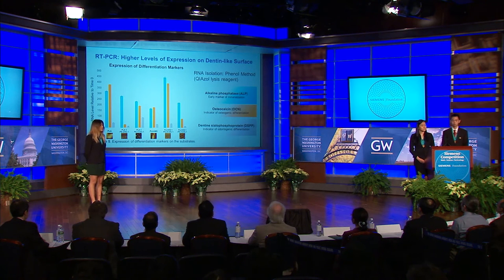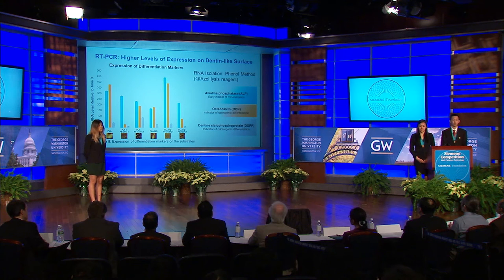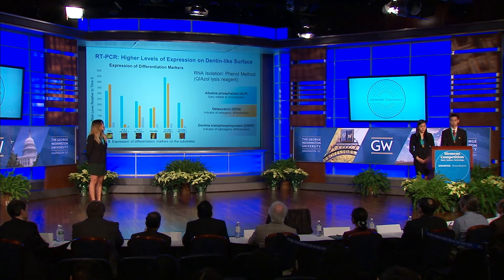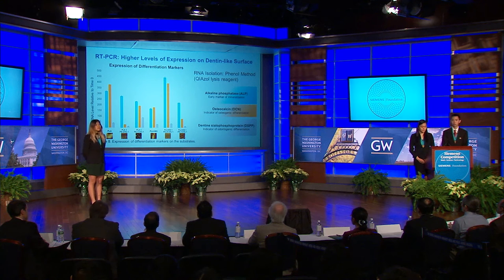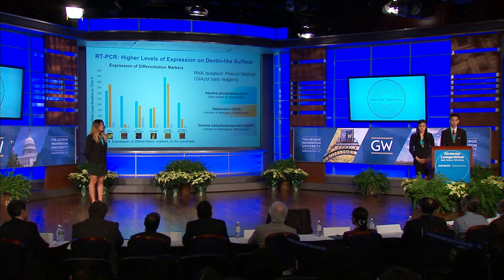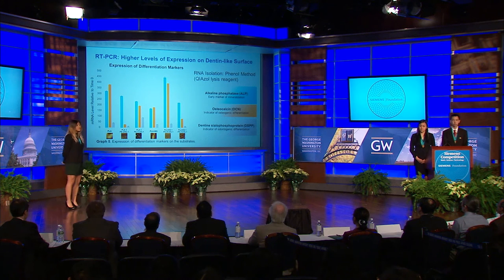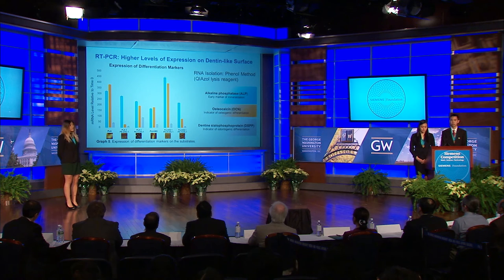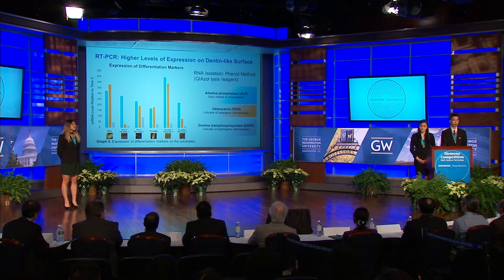We isolated RNA using the phenol method and conducted first-strand cDNA synthesis using SuperScript 2 RT. With RT-PCR, we looked for the early osteogenic marker alkaline phosphatase, the late osteogenic marker osteocalcin, and the late odontogenic marker dentin sialoprotein. A comparison between the two rough PLA substrates, as shown by bar sets 2 and 3, shows that PLA substrates characterized by larger bumps induced higher levels of overall differentiation. Additionally, the two flat substrates managed to induce higher levels of osteogenic differentiation than several of the rougher substrates, suggesting that flat topographies may be more advantageous than certain rough topographies.